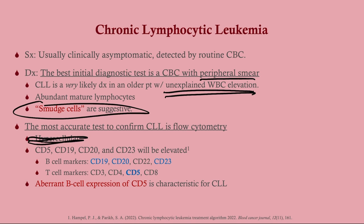The most accurate test to confirm CLL is flow cytometry, which can be done with peripheral blood. What you would see is CD5, CD19, CD20, and CD23. What stands out is CD5, because CD5 is a T-cell marker and most CLLs are B cells. Seeing CD5 along with these B-cell markers is very strange and quite specific for CLL — we call this aberrant B-cell expression of CD5. So the three key findings are: unexplained elevated white count in an older person, smudge cells on peripheral smear, and aberrant B-cell expression of CD5 on flow cytometry.